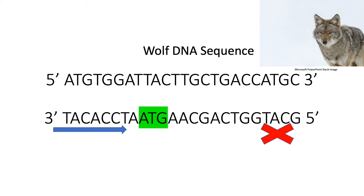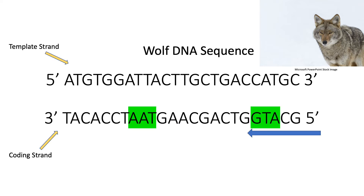He now looks at the bottom strand going from left to right and finds a start codon of AUG, but it too fails to have a stop codon after four amino acids. Finally, after looking at the bottom strand from right to left, the student finds a start codon of AUG and a stop codon of UAA after four amino acids, thus deducing that this is the coding strand while the top is the template strand.